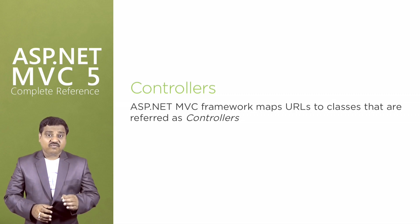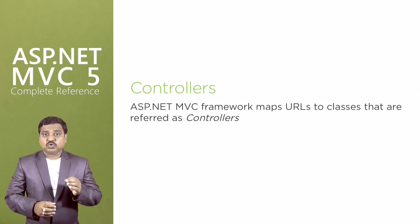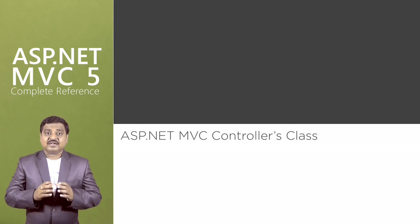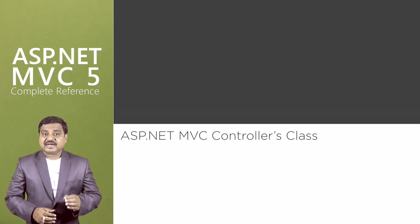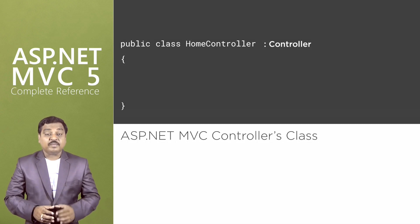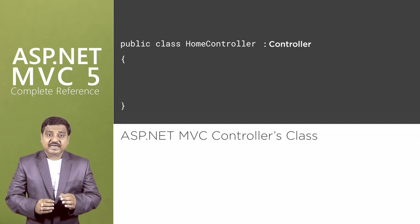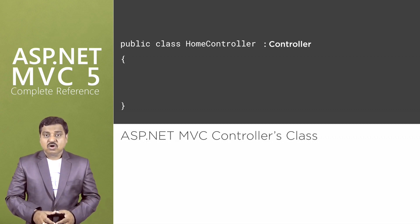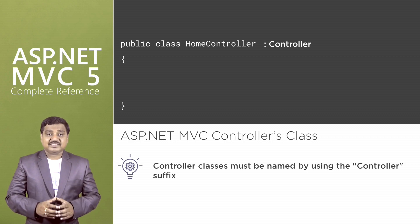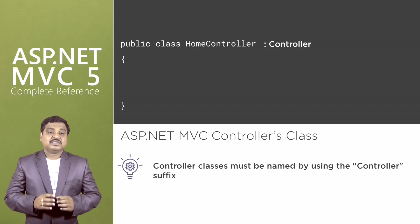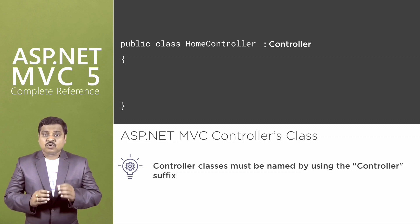ASP.NET MVC framework maps URLs to classes that are referred to as controllers. To understand a controller, it is a class which inherits from controller base and it is the default implementation of a controller. All controller classes must be named by using the controller suffix. In the above code, home is the controller name.